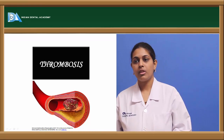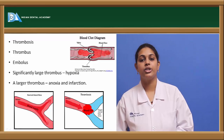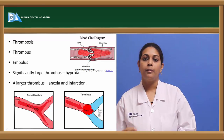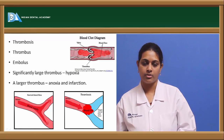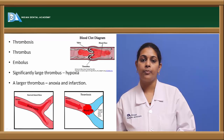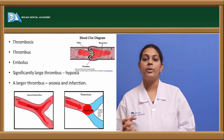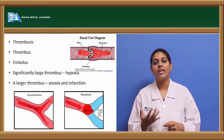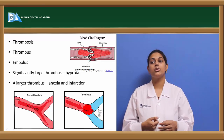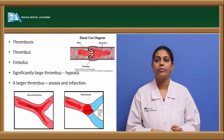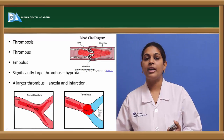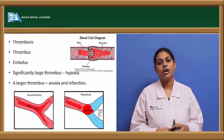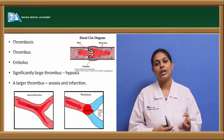Thrombosis is a condition where there is a block or occlusion in the blood flow through a blood vessel. This occlusion is mainly because of the formation of a blood clot in the absence of any injury. As seen in the picture, blood flow is being obstructed because of the formation of a thrombus, and this formation of thrombus is known as thrombosis.